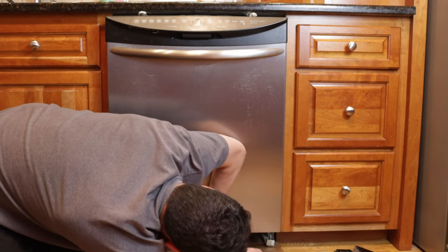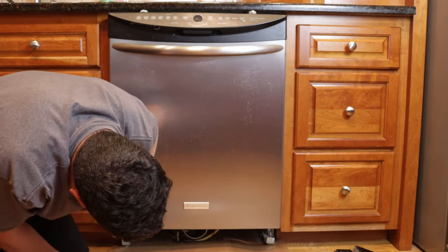We already have it unscrewed from the cabinet, we removed the kick plate, we turned off the power, and we put the legs in the lowest position. So now we got to slide it out and disconnect the power, the water, and the drain. In order to slide it out and not damage the floor, I'm going to grab some cardboard.